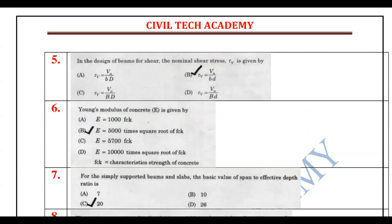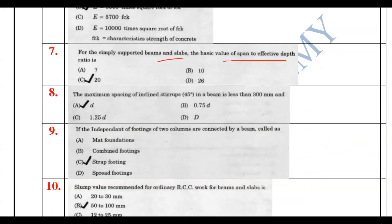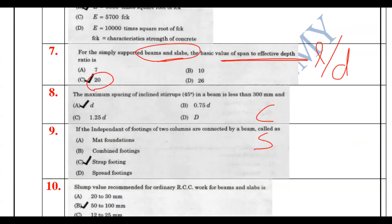The basic values of the L/D ratio: for a simply supported beam or slab, it is 20. For a cantilever, it is 7. For a continuous beam or slab, it is 26.